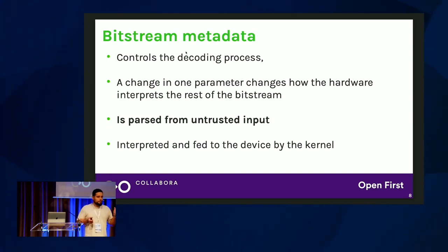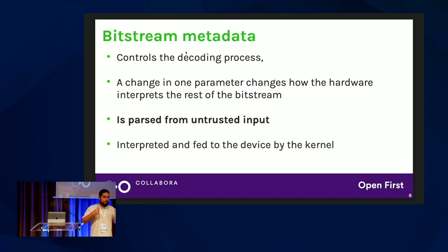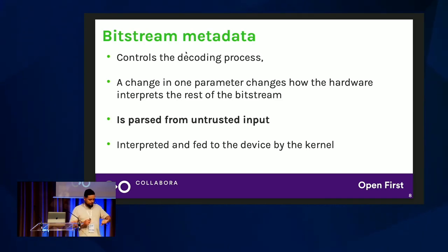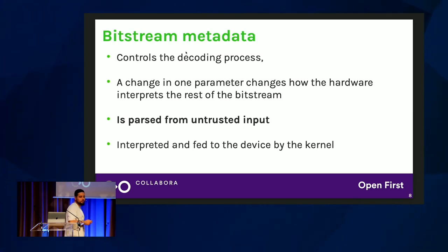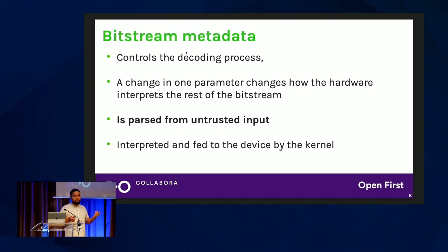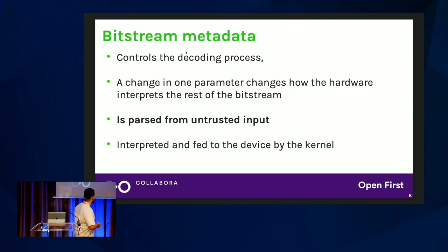The hardware unit will actually use this metadata to know how to interpret the data it's decoding. User space — when you open something in VLC — VLC will start parsing and extracting both the metadata and the compressed data. If VLC is using V4L2 as a decoder backend, it will send all of that to the kernel, and the kernel will have to use this metadata to program the device. A change in one parameter changes how the hardware interprets the rest of the bitstream, and this is totally from untrusted input, provided by user space. In the kernel, we basically have a very ad hoc validation strategy — somebody read a PDF specification and manually added if statements to check whether the metadata is within bounds.